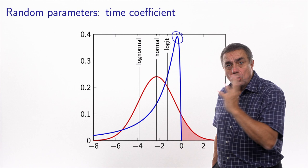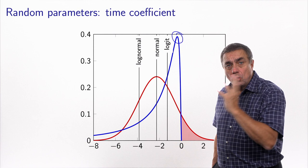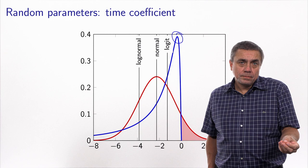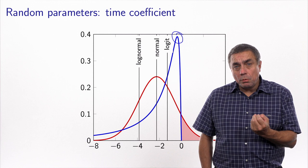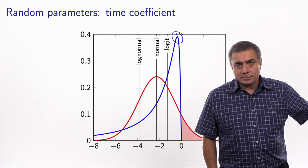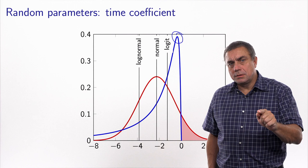Suppose that some respondents just ignored the travel time — let's say they looked only at the cost. These people would have a coefficient which is zero, because they ignore the travel time. And this may be what the log-normal distribution is capturing. But the problem with the log-normal distribution is that if you have a lot of people close to zero, it has to be compensated by people who are in the tail of the distribution. This is what we will try to relax by using a discrete distribution.